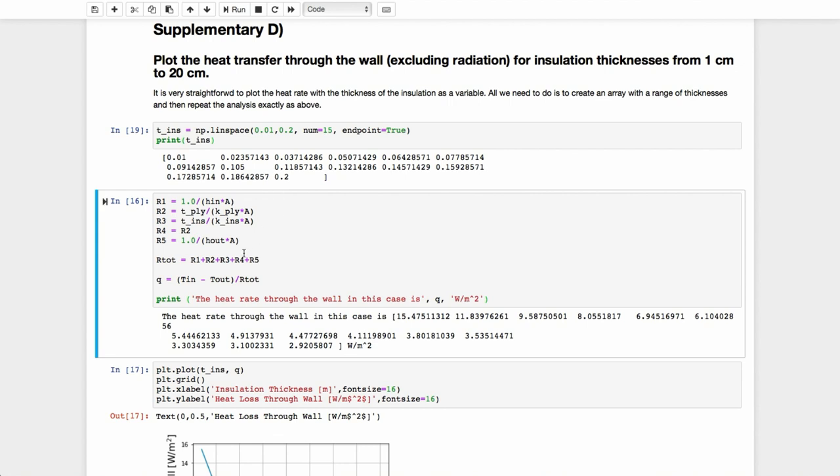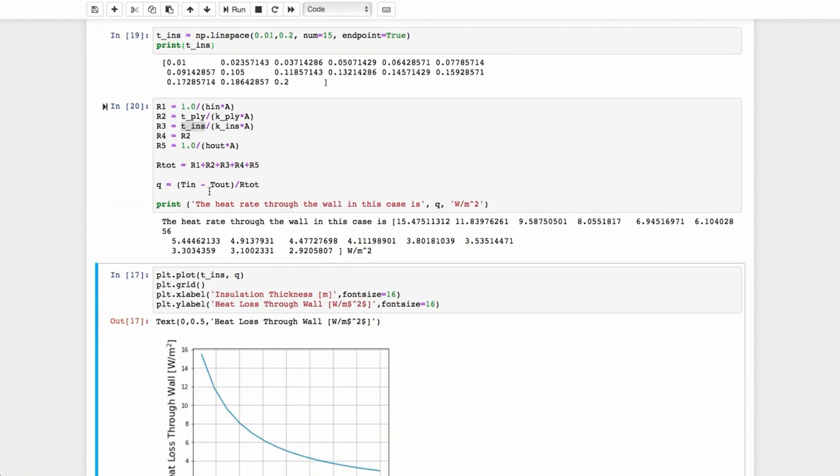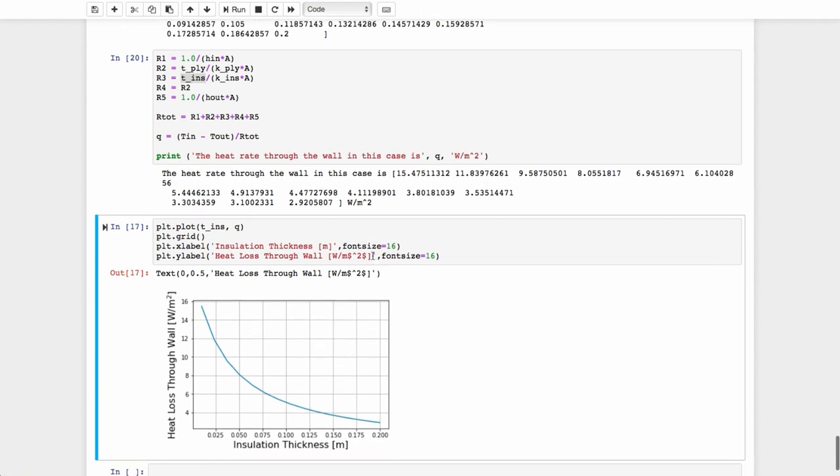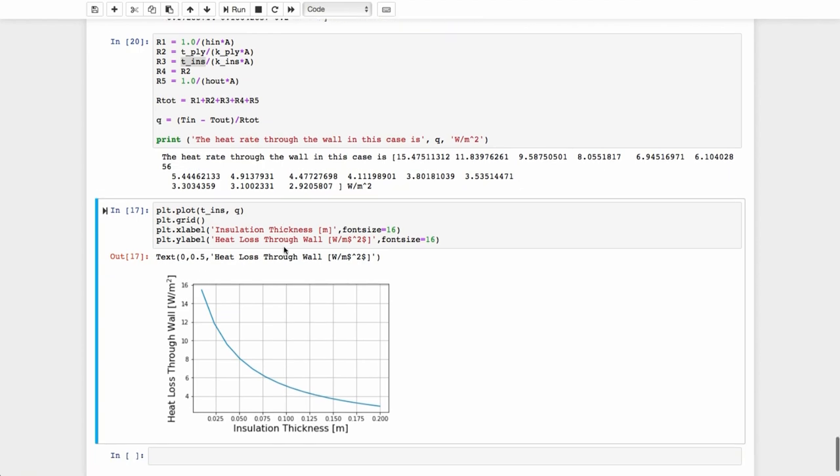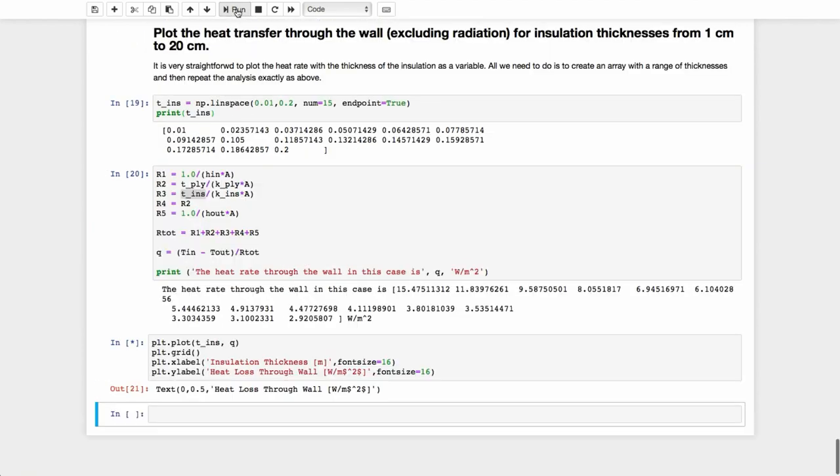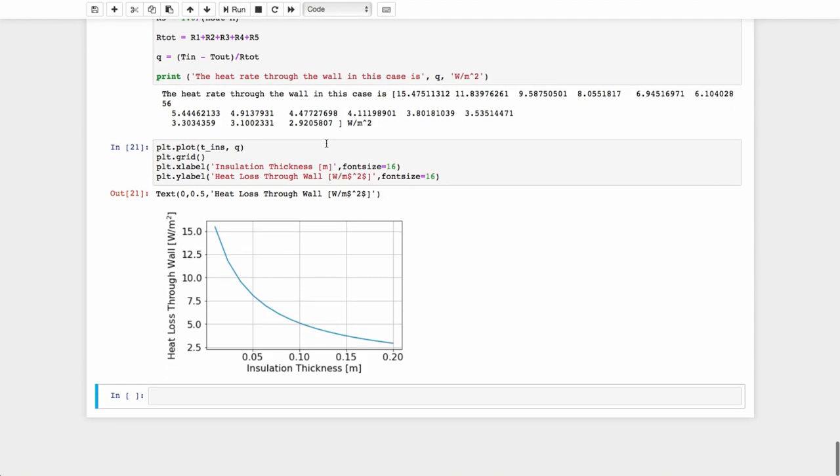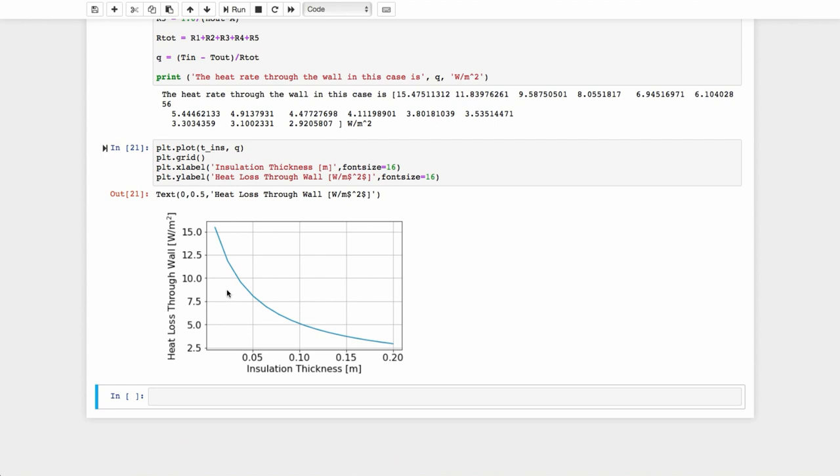So now I don't have to change anything. I can cut and paste what was up there before. T_insulation is now a vector instead of a single number as it was above and so when I calculate this, I will see that the heat rate that is calculated is now also a vector which has 15 entries and therefore, I can very easily plot it. Here's an example of how we do a plot in a Jupyter notebook and we can clearly see that the heat loss through the wall is decreasing as we go to thicker and thicker insulation thicknesses